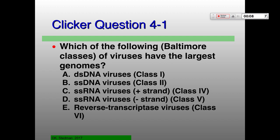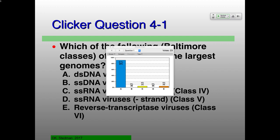Clicker question: which of the following Baltimore classes of viruses have the largest genomes? Options: Class 1 double-stranded DNA; Class 2 single-stranded DNA; Class 4 positive-strand RNA; Class 5 negative-strand RNA; Class 6 retroviruses. The correct answer is A — double-stranded DNA viruses have the largest genomes.